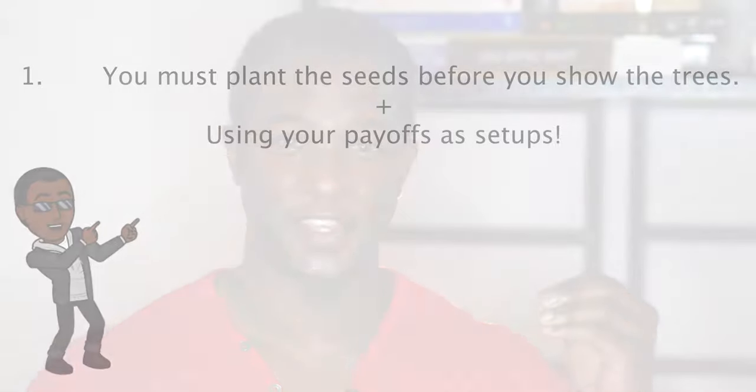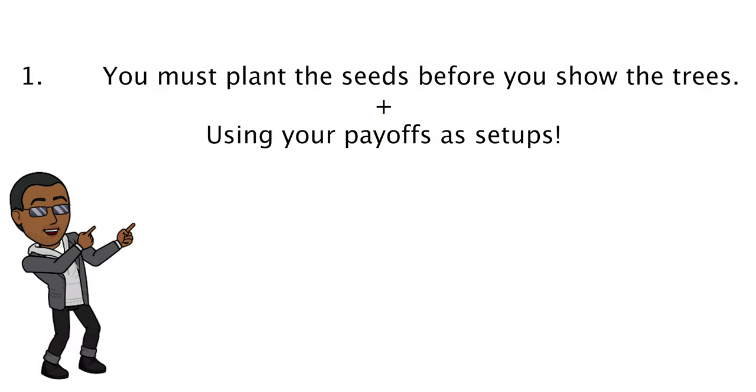I've found in my research that there are four ways to implement setups and payoffs properly in your film. Number one: you've got to plant those seeds before you show the trees. Effective storytellers — those veterans out there — are not only able to do this, but they make setups and payoffs work in such a synergistic way that their payoff is also their setup, and their setup is their payoff for future story plot points.